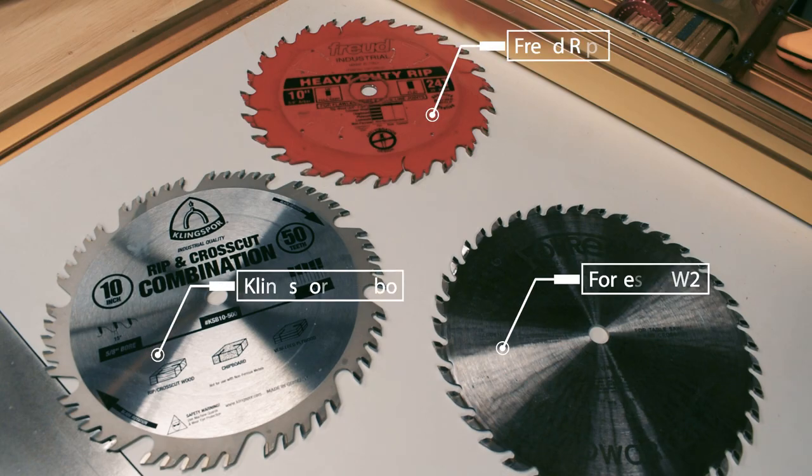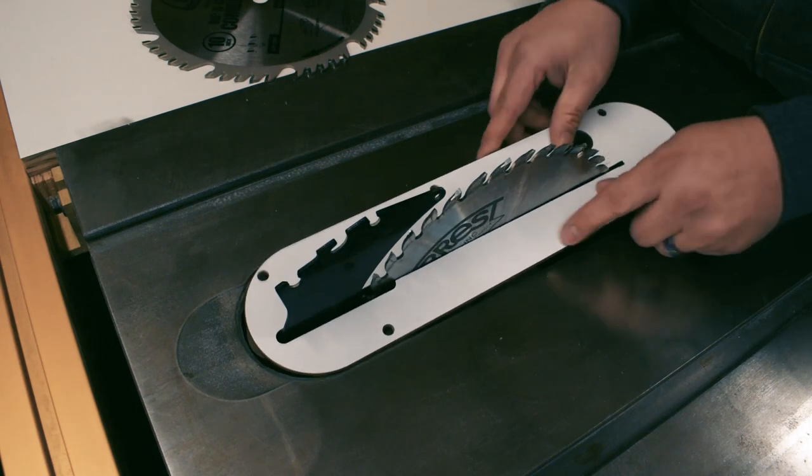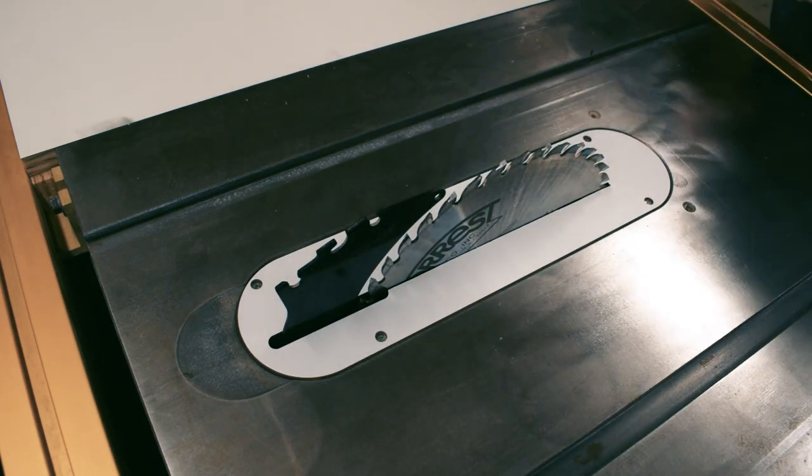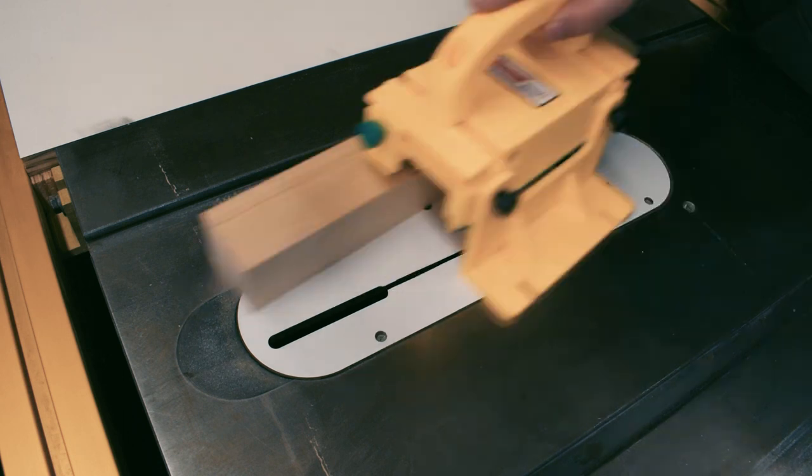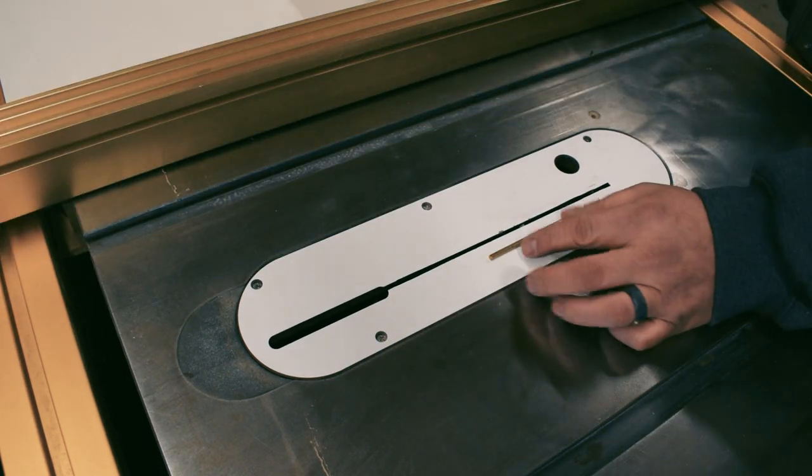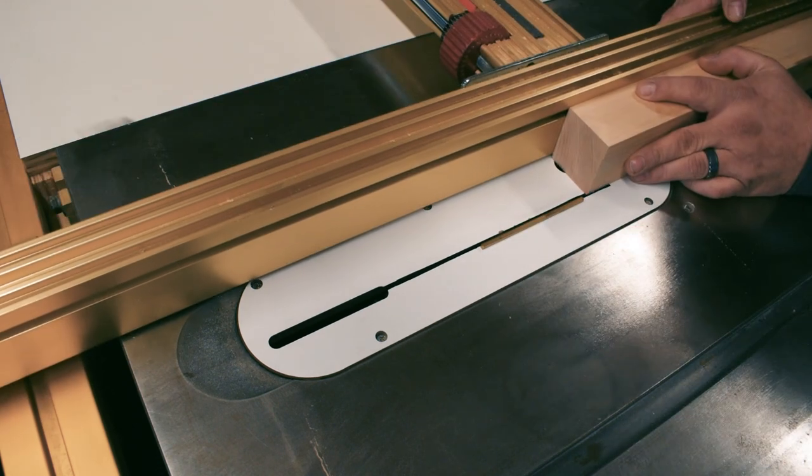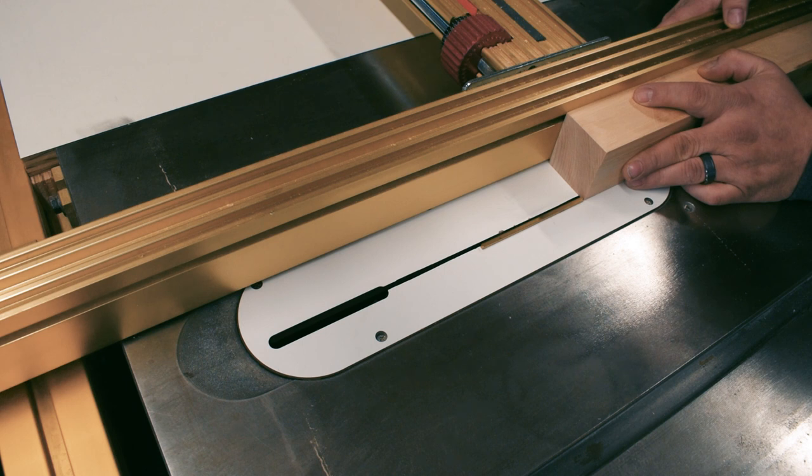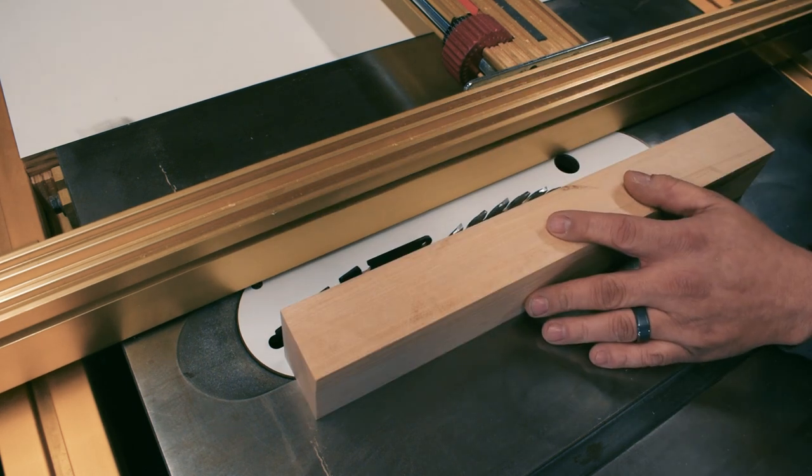The Freud and the Forest blades are the blades that I use the most in the shop. I'm going to take each blade and rip a thin strip off of a maple turning blank. Then I'm going to compare the smoothness of cut and see if there's any burning present. I'm basically testing the combo blade to see if it can replace the rip blade and the Forest blade, because I basically hate changing blades and if I can find something that's more efficient in the shop, I'm all about that.